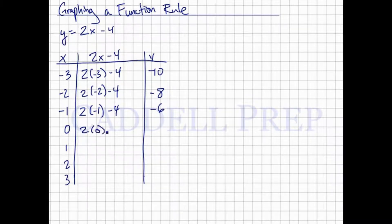Let's try 0. 2 times 0 is 0, minus 4 is negative 4. Let's put 1 in. So this becomes 2 minus 4, which is negative 2. Let's put 2 in. 2 times 2 is 4, minus 4 is 0. And now let's put 3 in. 2 times 3 minus 4. This is 6 minus 4, which is 2.